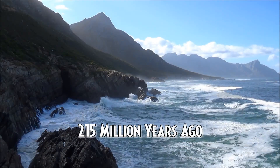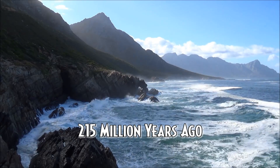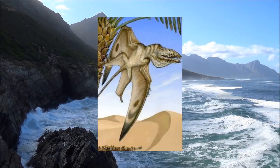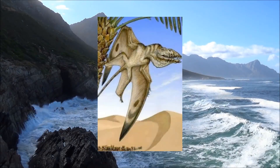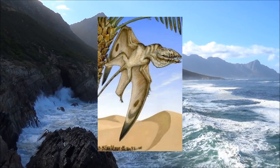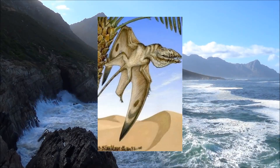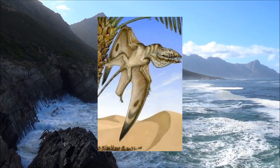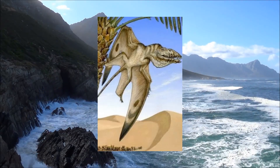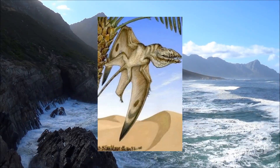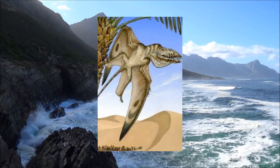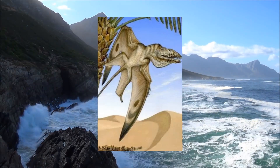215 million years ago, the first flying Archosaurs, Pterosauria, appeared. Small, bat-sized reptiles that mostly ate fish and other small prey, before eventually splitting into the Pterodactyloids, which had smaller tails and a lack of teeth.